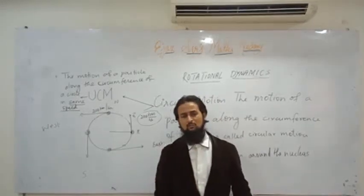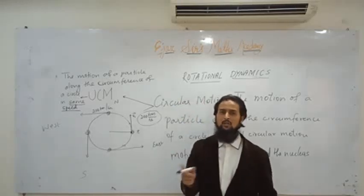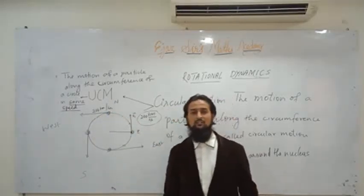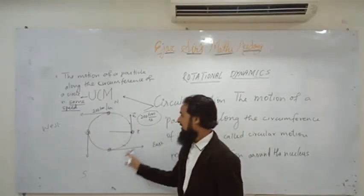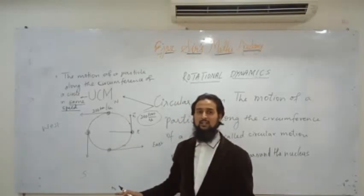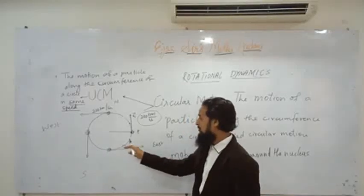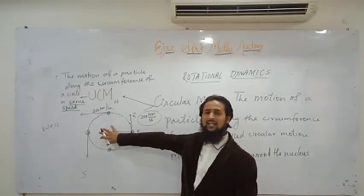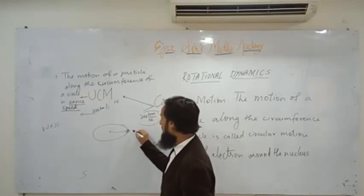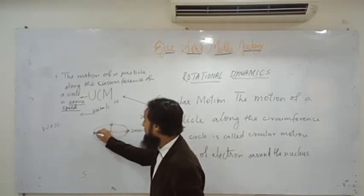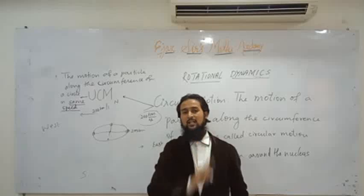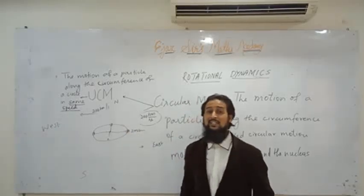Velocity direction changes — that is a change in velocity. Change in velocity per unit time is acceleration. The car was going in a horizontal circle at 200 km/hr — same speed at every point — but direction changed continuously. So uniform circular motion is accelerated motion.